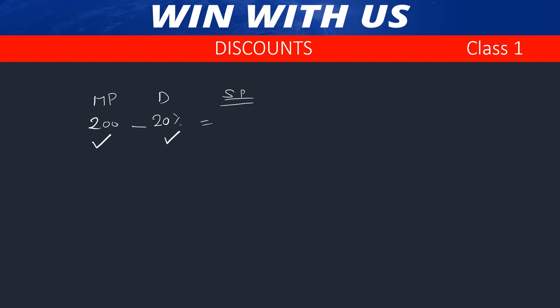The price is $200 and the discount is 20%. If you have a discount percentage, you can convert it into rupees. How do you convert? 200 and 20 to multiply: 20 is 4,000 and then divide by 100. So we have market price 200, and 20% discount. The market price has 20% discount, so the selling price is 160 rupees.